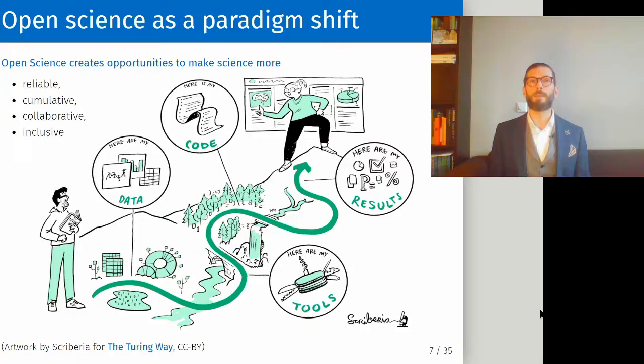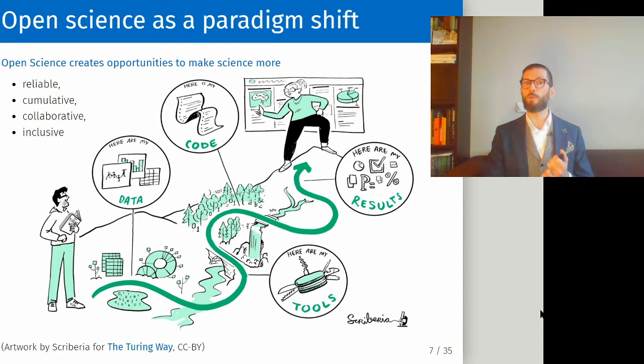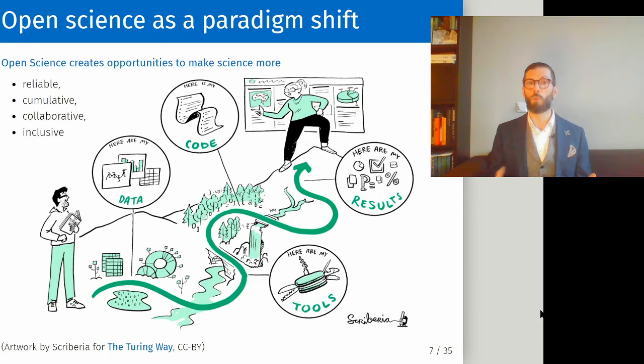But all this sounds quite negative. Does that mean we should consider open science to be a punishment for engaging in bad science? Maybe not. We can also see open science as a paradigm shift, because it creates opportunities to make research more reliable, more cumulative — since in the face of complete transparency it is easier to build upon predecessors' work — more collaborative, and finally more inclusive. Not every university has access to the same journals, participant pools, or methods. If we make all phases of the research process transparent, researchers can contribute regardless of their means.